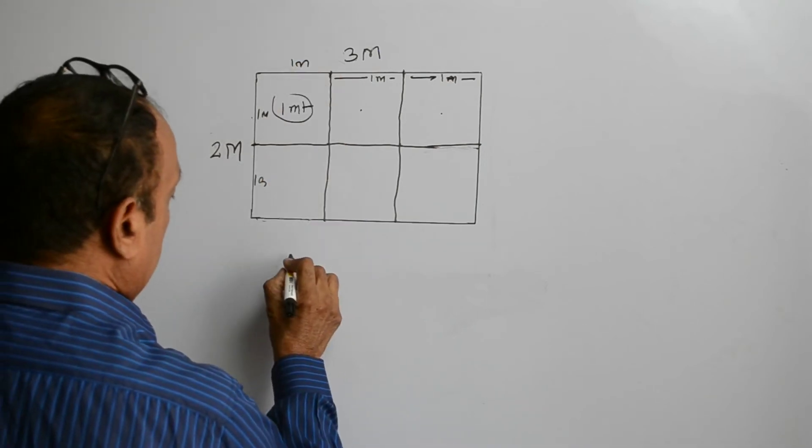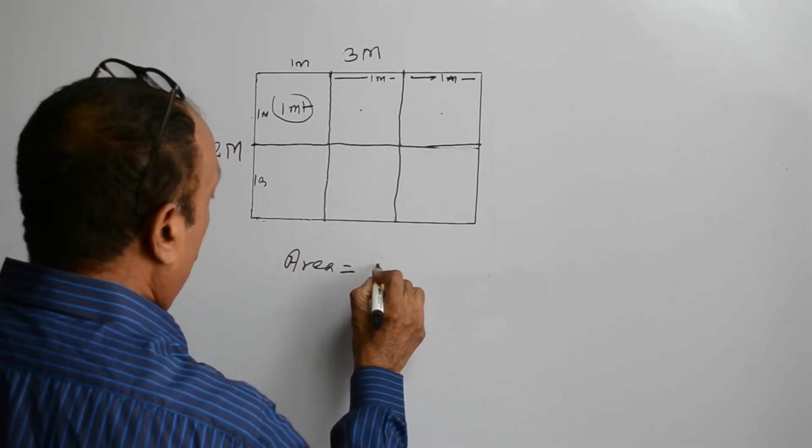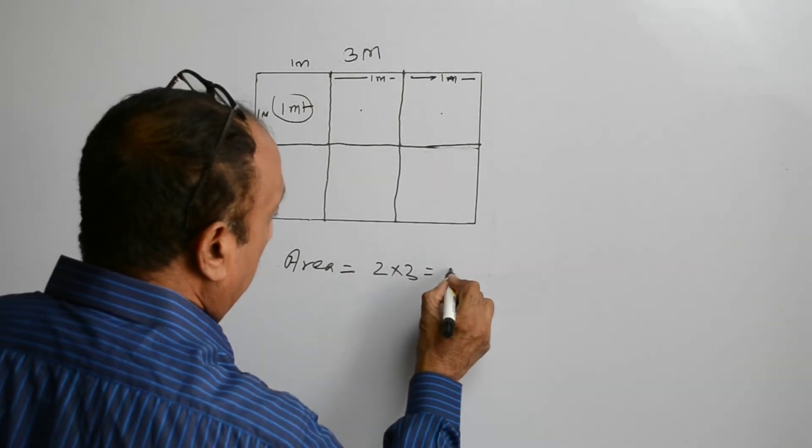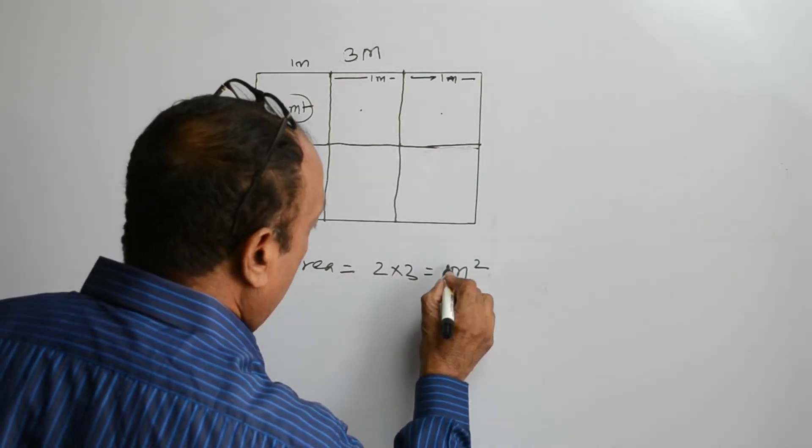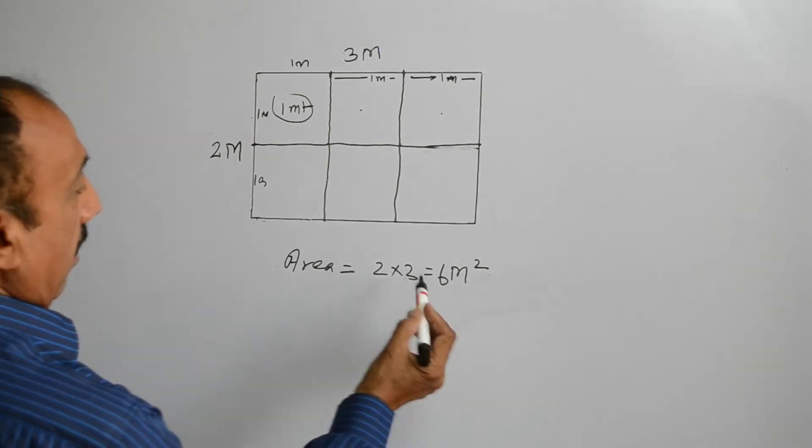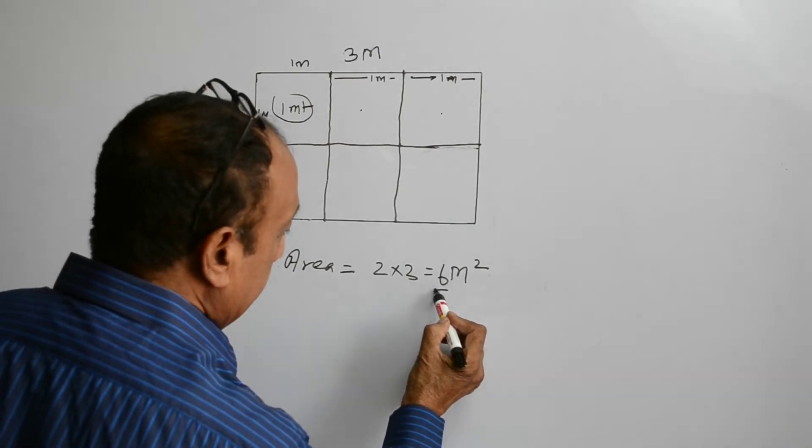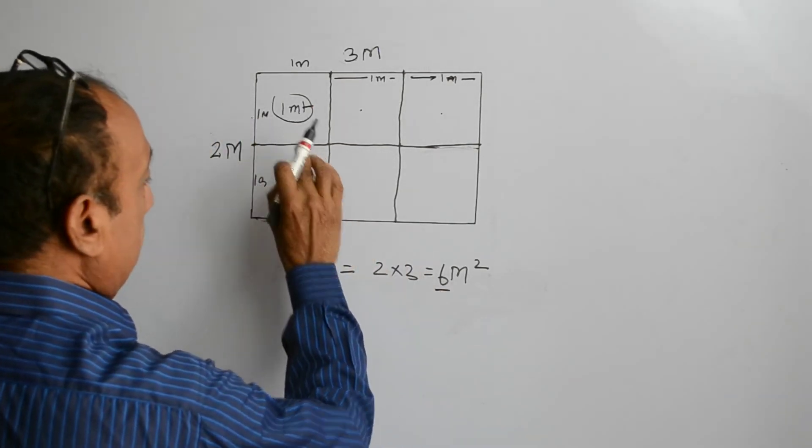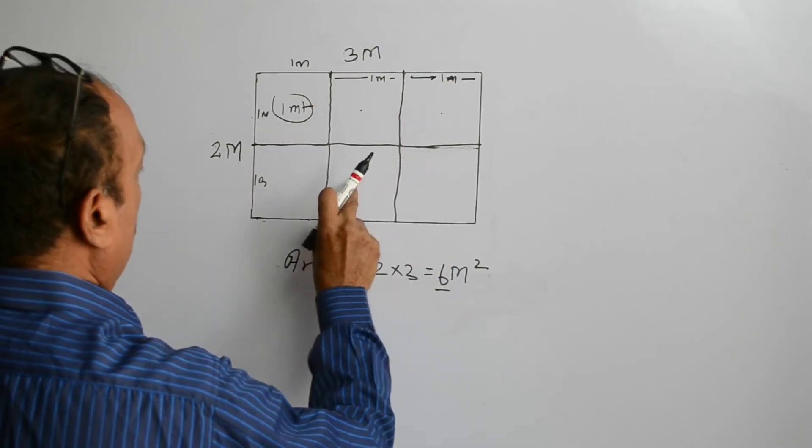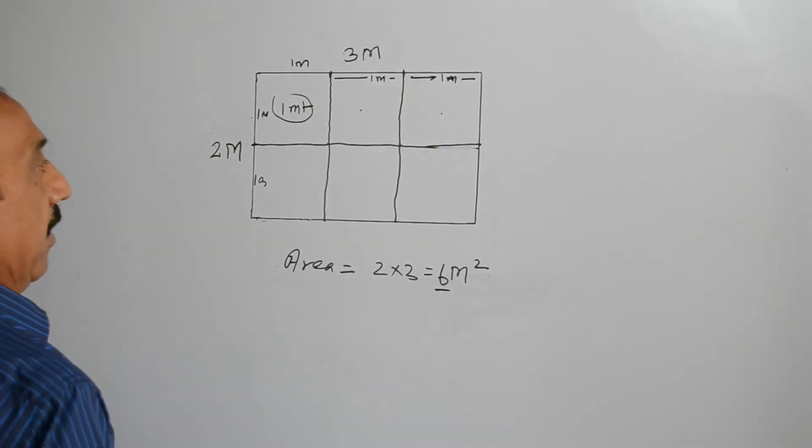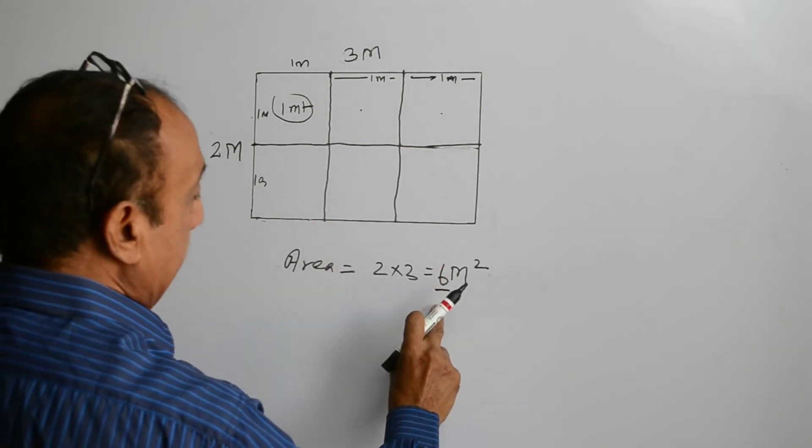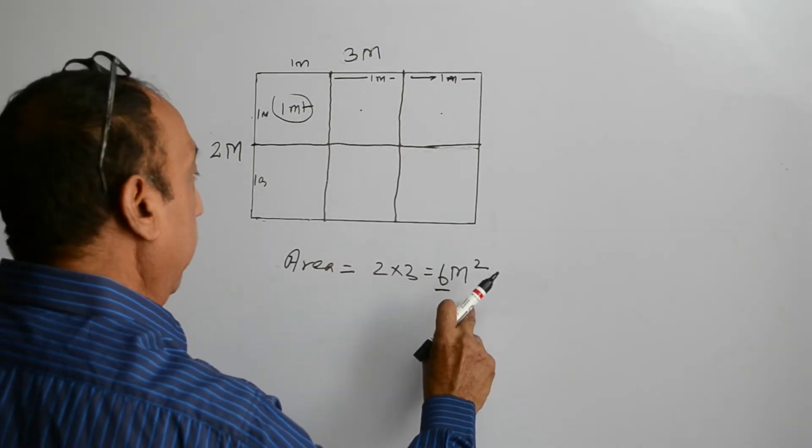When we find the area of this rectangle, the area will be equal to 2 into 3 meters square, 6 meters square. We are getting 6 squares of 1 meter each. So, that is why we call the area as the meter square.